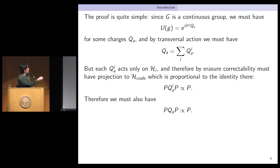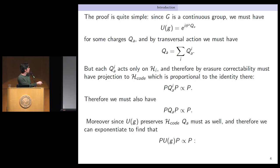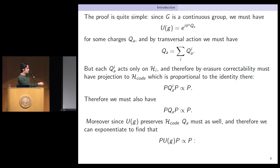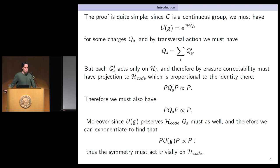Since the charge is a sum of these pieces and this is a linear equation, the full charge also acts trivially on the code subspace. Moreover, since the full symmetry — the exponential of the charge — preserves the code subspace, we can differentiate with respect to theta and exponentiate to find that the symmetry itself is proportional to the identity on the code subspace, meaning it's trivial. Therefore the symmetry must be trivial. That's the proof of the Eastin-Knill theorem.